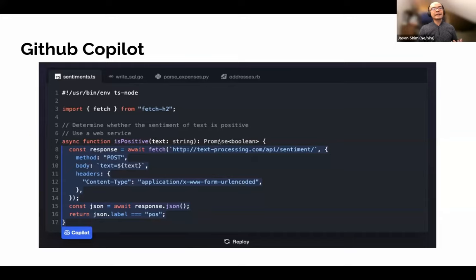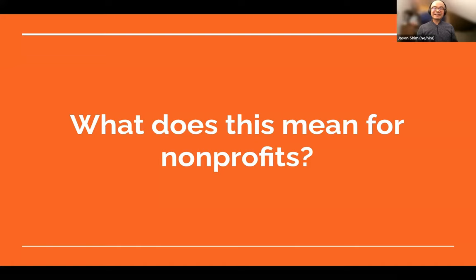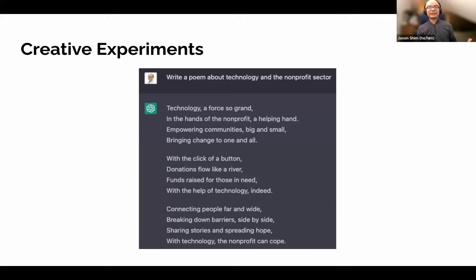Microsoft owns GitHub Copilot, which came out in 2021. You can input comments about what you would like a snippet of code to do, and it will auto-complete the rest. It may not always be accurate or correct, but it's a copilot alongside a developer that can significantly accelerate the software development process. Similar technology now exists for general text completion. ChatGPT is the latest release in a series of GPT models — there has been GPT-2, 3, and ChatGPT is considered 3.5. Here's a quick example: as a creative experiment, write me a poem about technology in the nonprofit sector — and it generated a response in a few seconds.